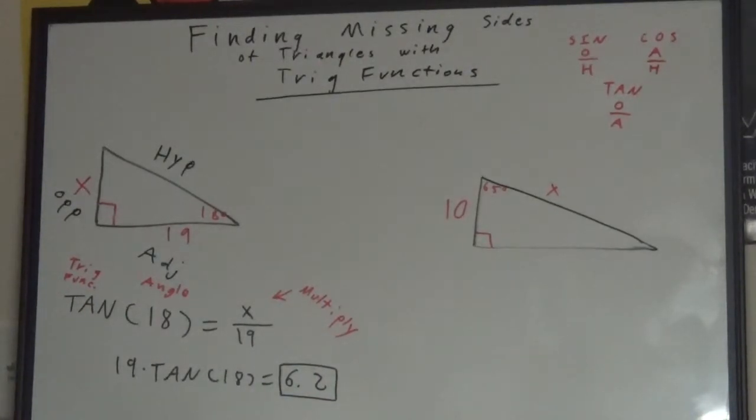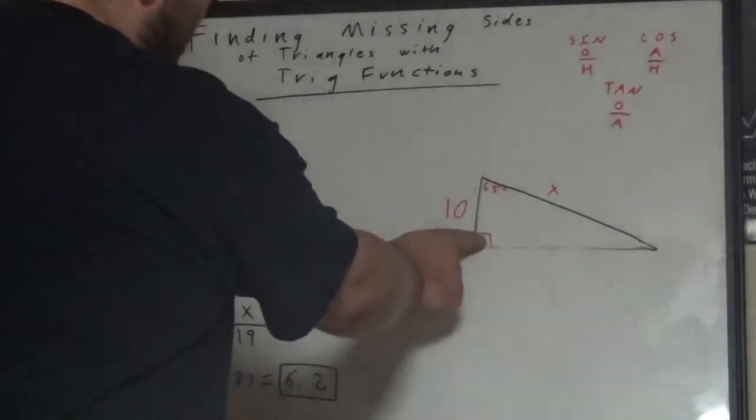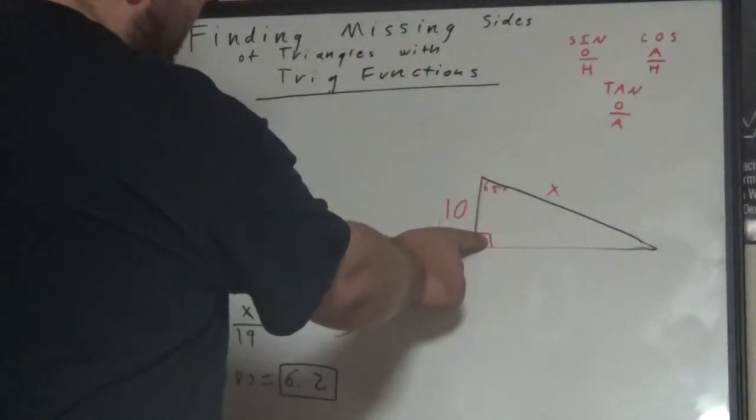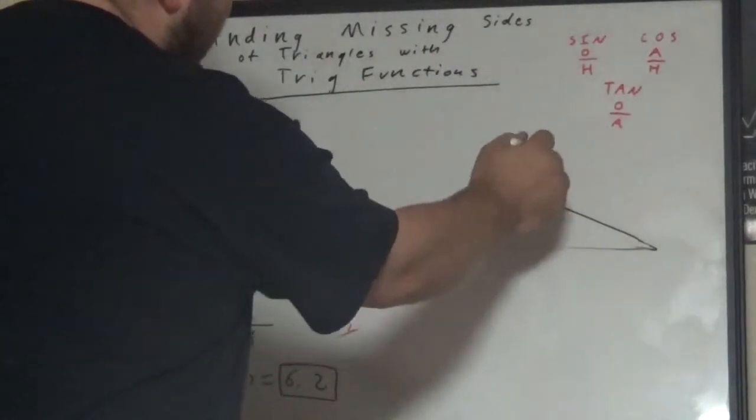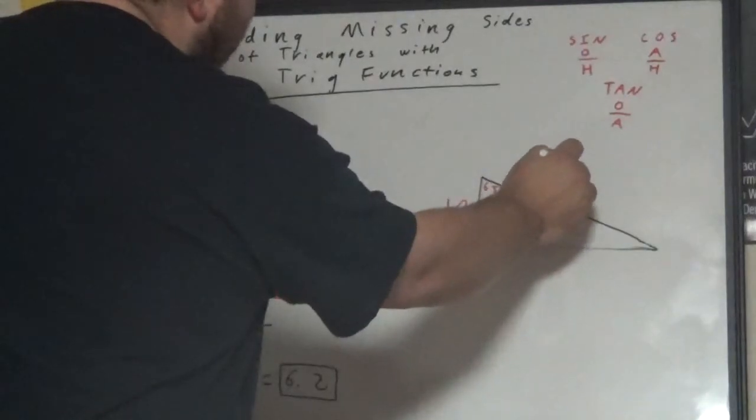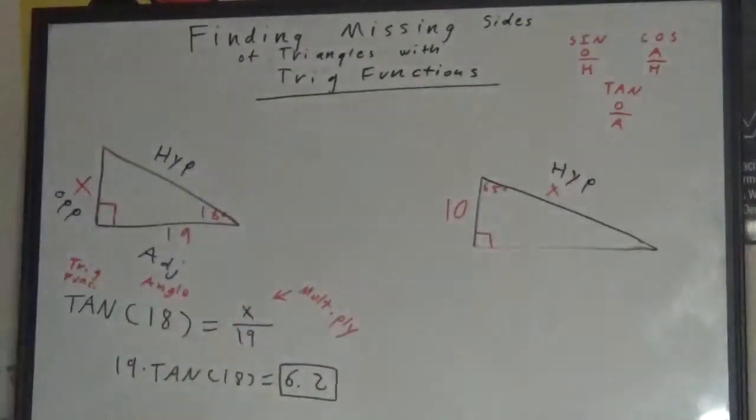For the second one, we're going to do the exact same thing. Here we are going to find the side opposite the right angle not connected to it and we are going to call that the hypotenuse because that is the hypotenuse.